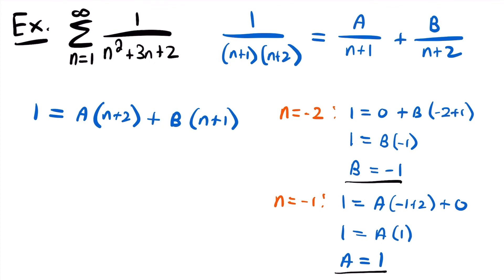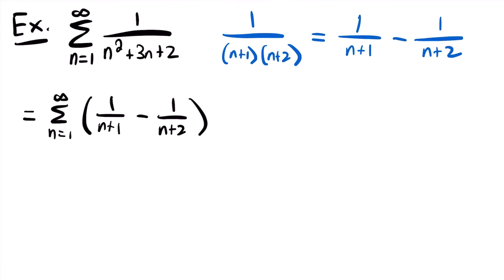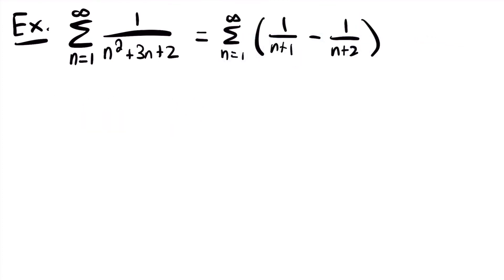Replacing A with 1 and B with negative 1, we can rewrite the series. We now have that this is equal to the sum from n equals 1 to infinity of 1 divided by (n plus 1) minus 1 divided by (n plus 2). Now we can look at the nth partial sum of our series to see if we have a telescoping series.